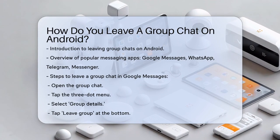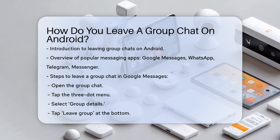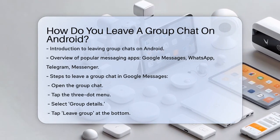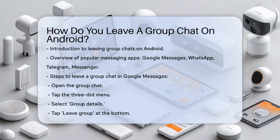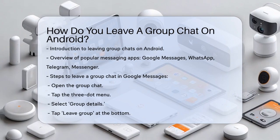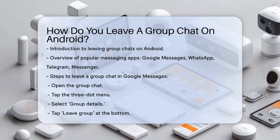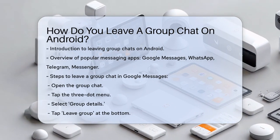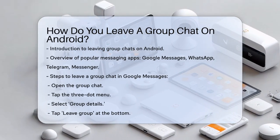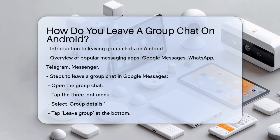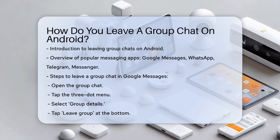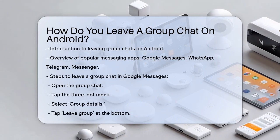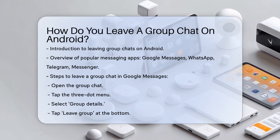Let's start with Google Messages. If you're using this app, open the group chat you want to exit. Tap the three-dot menu in the upper right corner and select Group Details. Here, you'll find the Leave Group option at the bottom. Just tap on it and you'll be out of the group.